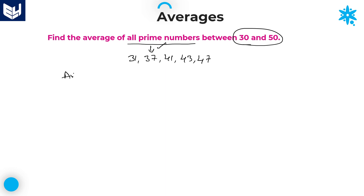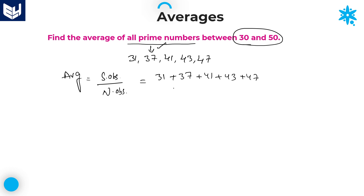Now we can calculate the average. As we know, average is equal to sum of observations divided by number of observations. Here it is equal to 31 plus 37 plus 41 plus 43 plus 47, whole divided by the number of observations. How many values are there? 5 values. So the denominator value is 5.